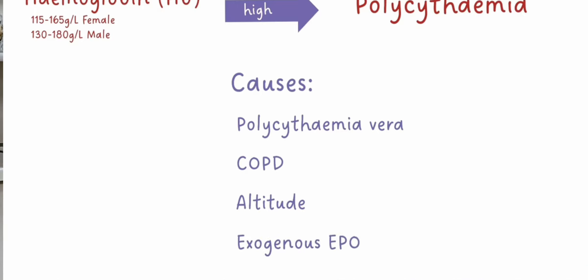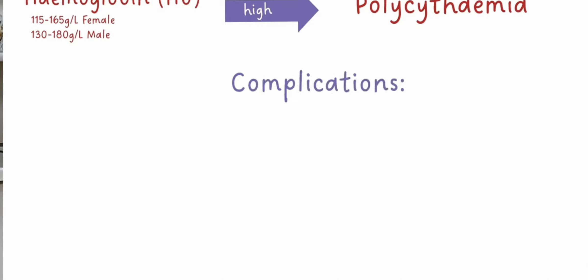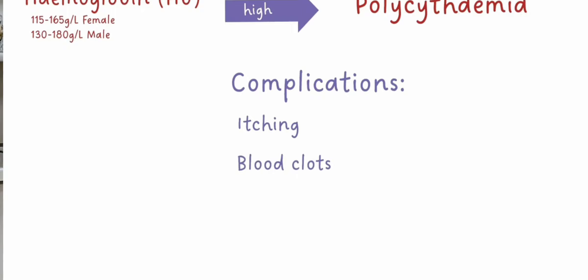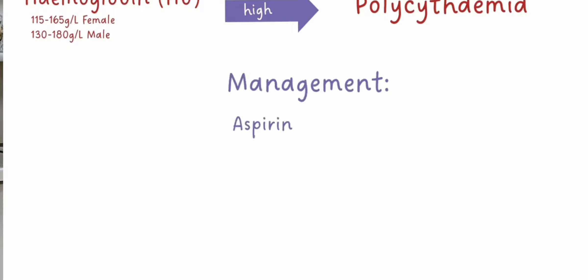We have hypochromic anemia. These are the signs of a chronic disease, iron deficiency, and thalassemia. These are the signs of new thalassemia and thalassemia.